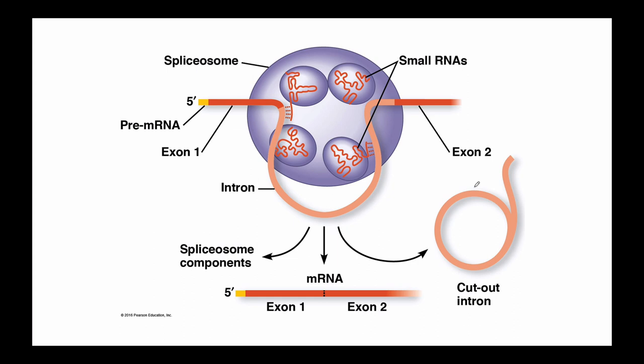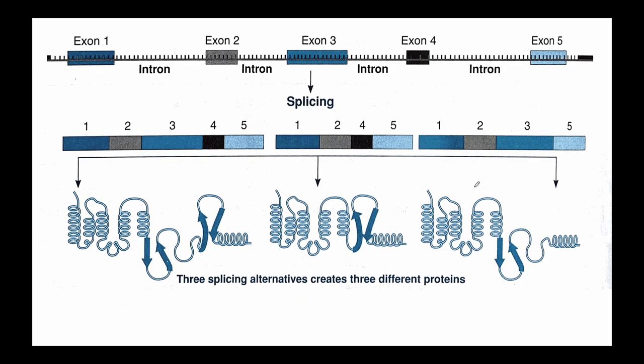One would ask, why would we have introns in the first place? It seems kind of redundant, seems like a waste. Sometimes mother nature selects the simplest process. Well, here are some interesting thoughts. One, the same segment of DNA, here are five different exon portions or five different important coding regions of a segment of DNA, can be interpreted different ways to produce different proteins.